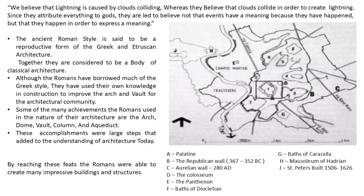Starting with the introduction, ancient Roman style is an amalgamation of Greek and Etruscan architecture. Together they are considered to be a body of classical architecture. Although the Romans borrowed so much of architecture and style from the Greek period — like the Ionic style, Corinthian style and Doric style — they used their knowledge to improve the arch, vault and even the dome in the architectural community. These accomplishments added to the understanding of architecture today, allowing Romans to create many impressive buildings and structures.